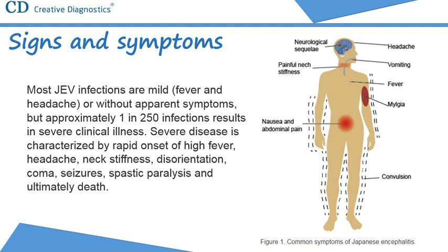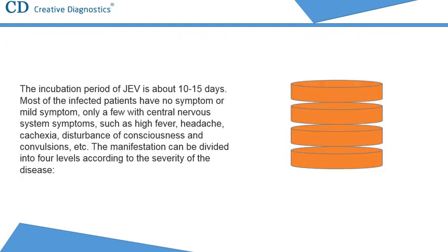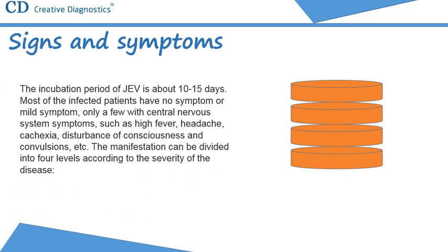Of those who survive, 20%-30% suffer permanent intellectual, behavioral or neurological problems such as paralysis, recurrent seizures or the inability to speak. The incubation period of Japanese encephalitis virus is about 10-15 days. Most of the infected patients have no symptom or mild symptom, with only a few presenting central nervous system symptoms such as high fever, headache, cachexia, disturbance of consciousness and convulsions. The manifestation can be divided into four levels according to the severity of the disease: mild symptoms, common symptoms, severe symptom, and burst symptom.